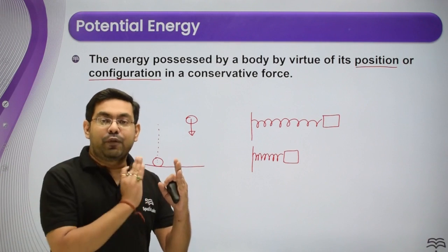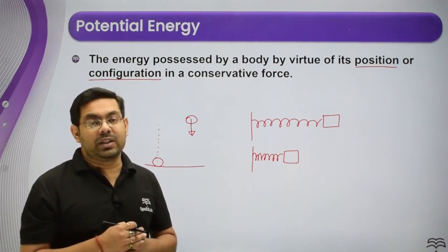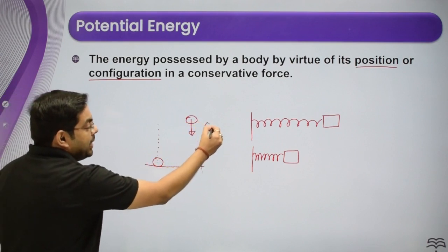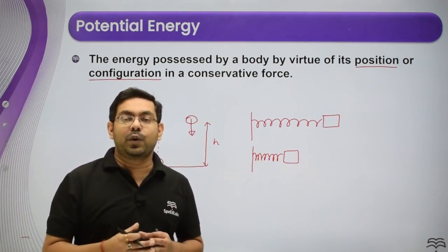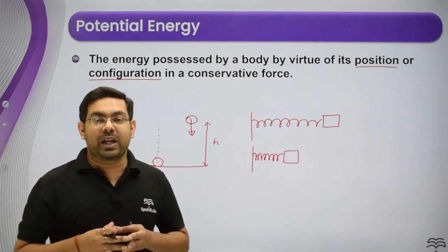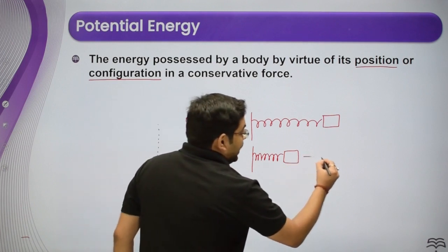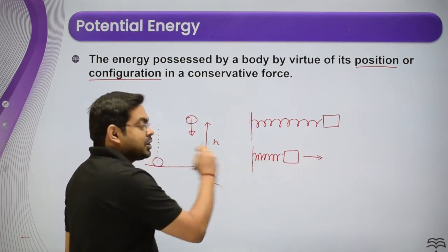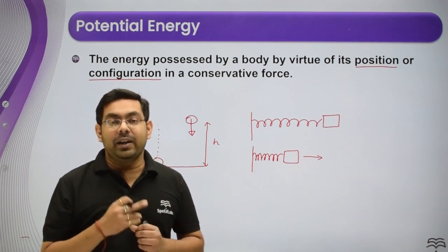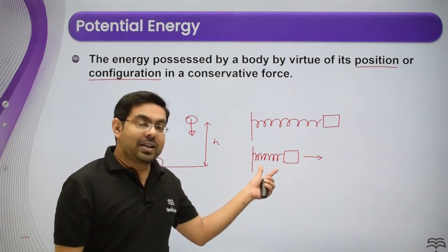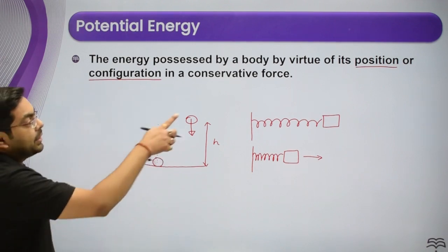Now when you release it, the spring — due to its shape and deformation — possesses some energy, called elastic potential energy. The energy that came from height is called gravitational potential energy. When the spring is released, it transfers its elastic potential energy to the block, and the block gains kinetic energy. So spring's elastic potential energy is converted into kinetic energy of the block.